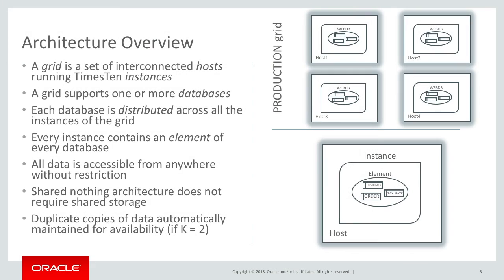When we talk about X10 Scale-out, we're going to talk about grids. A grid is a set of interconnected hosts running X10 instances. You configure X10 on 10 machines, or 12 machines, or 2 machines — whatever you want. Once you configure X10 in a grid across a number of machines, a single grid can support one or more databases. Just like in X10 Classic, you can install X10 once and that single instance can support two or three or four databases. You can do the same thing with a grid.